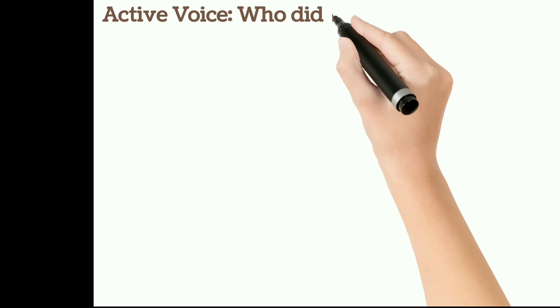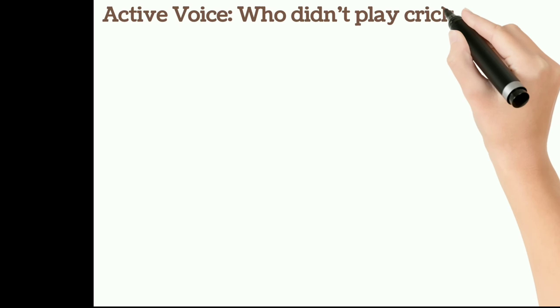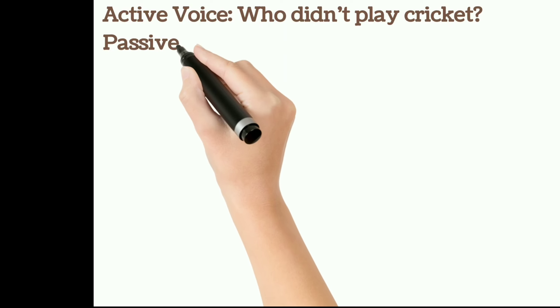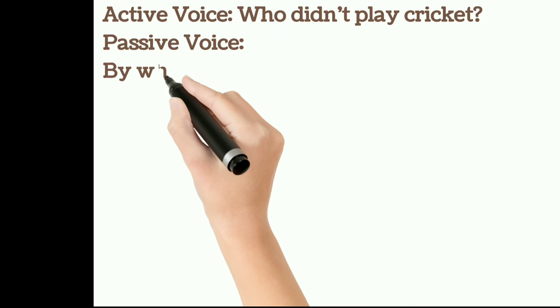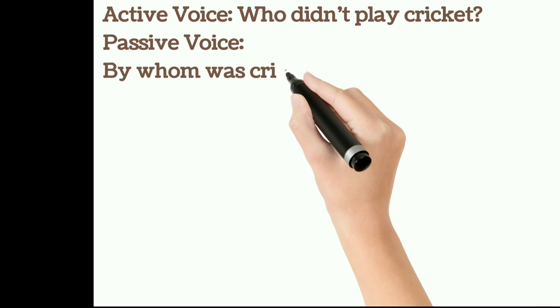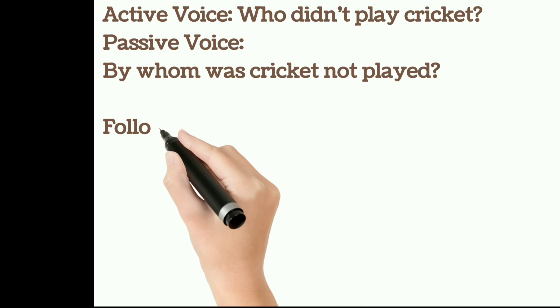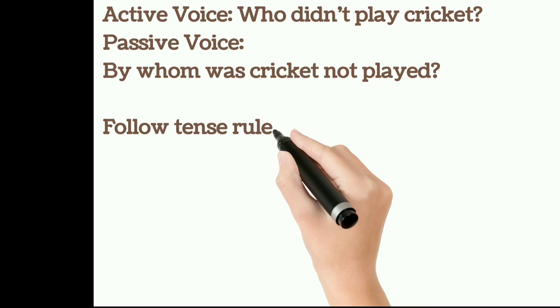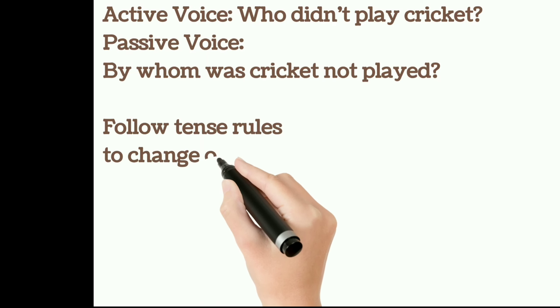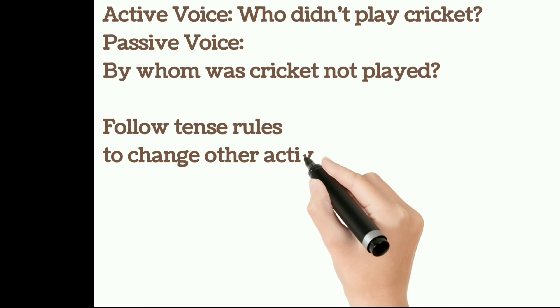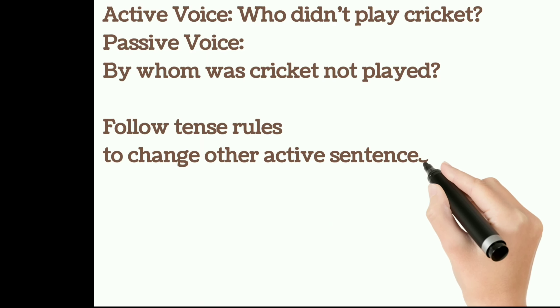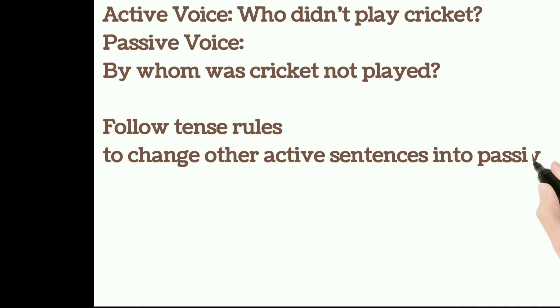Active voice: who doesn't play cricket. Passive voice: by whom was cricket not played. Follow tense rules to change other active sentences into passive voice.